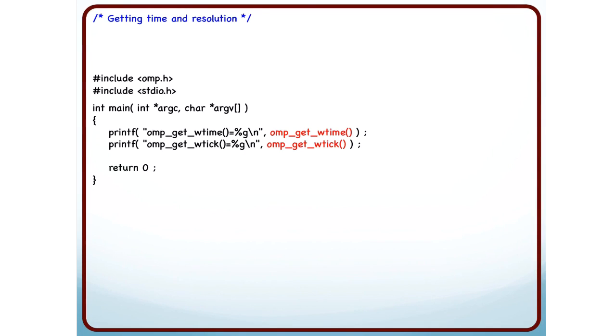The first thing you should know if you are trying to optimize code or gauge the performance of different codes, you need to be familiar with some functions. OMP get W tick tells you the resolution of the timer in seconds. This means that the resolution of this timer is 1 nanosecond.